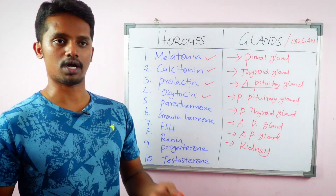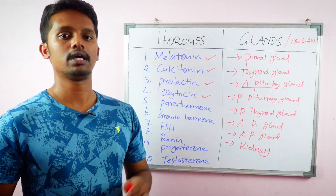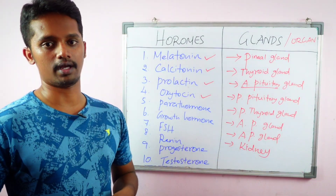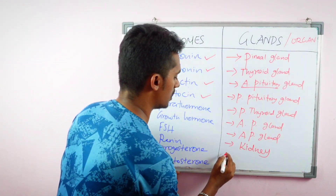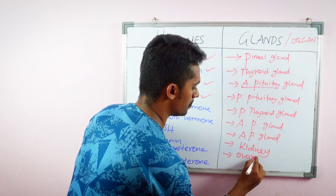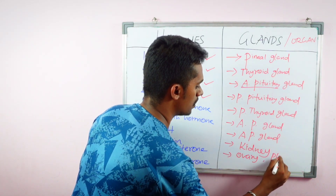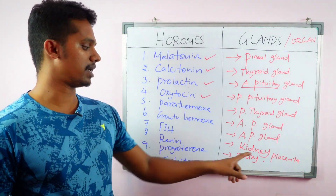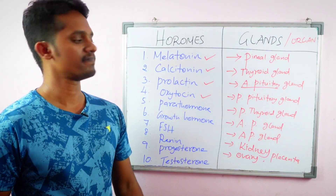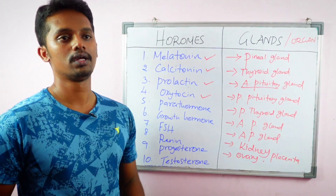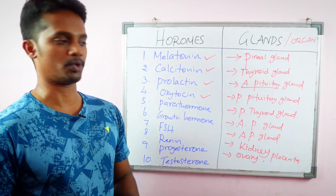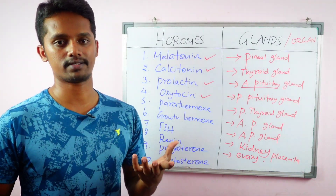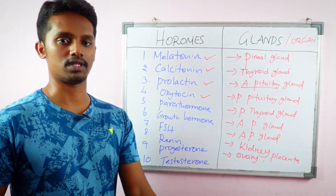The ninth hormone is Progesterone. Progesterone is an estrogen-type gonad hormone — a female sex hormone. It is secreted mainly by the ovaries and also by the placenta. Progesterone and estrogen are both female sex hormones, so the female gonad, the ovary, is the correct answer.